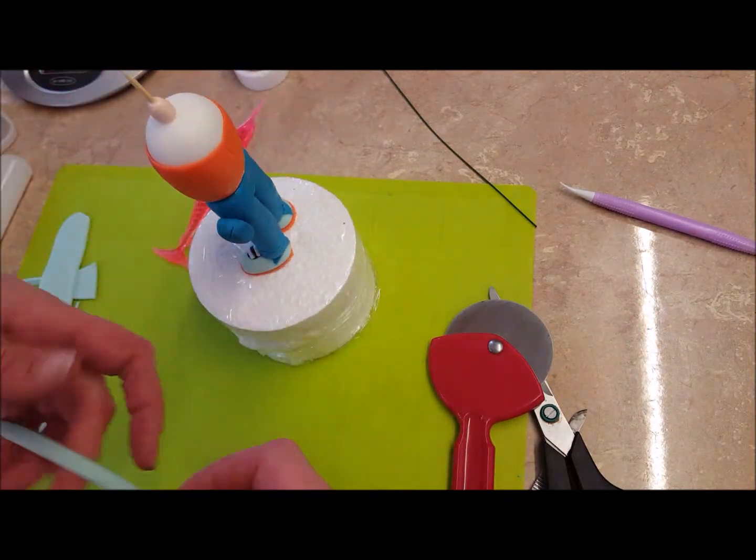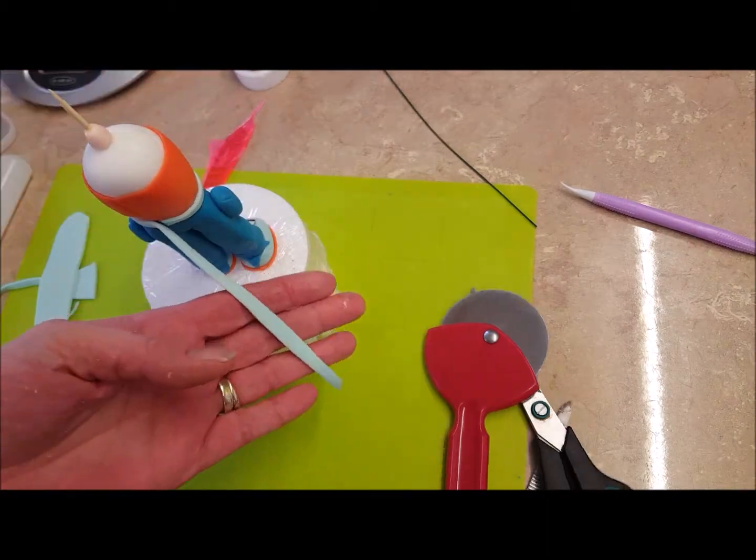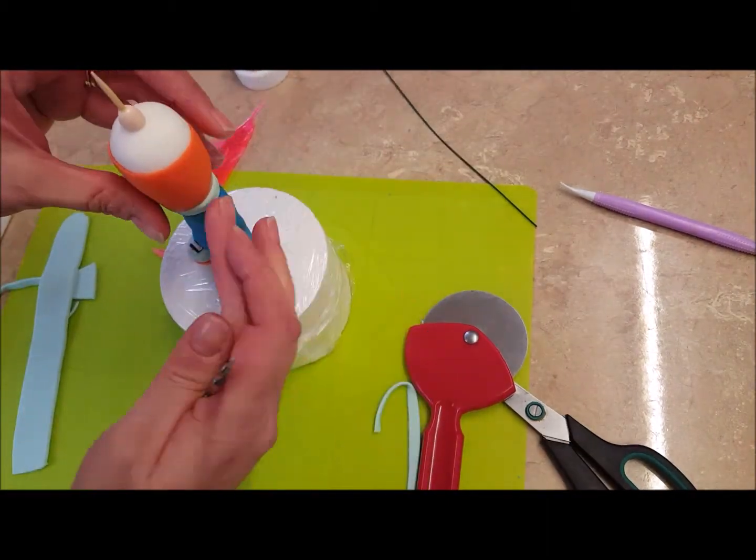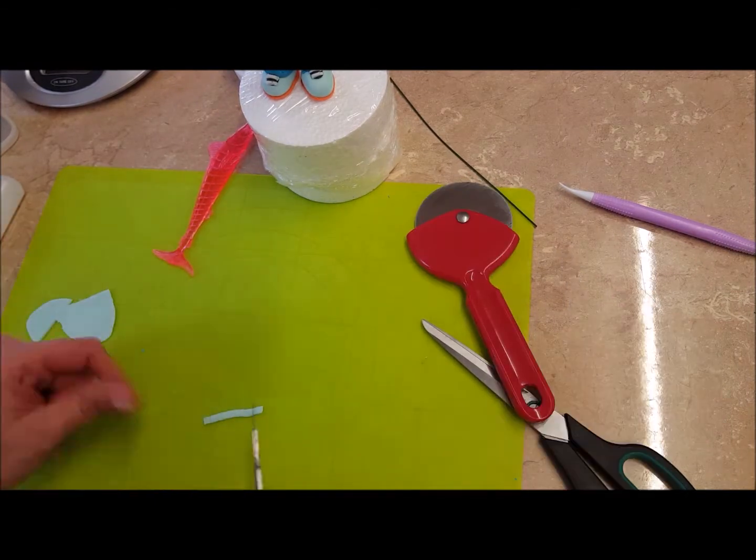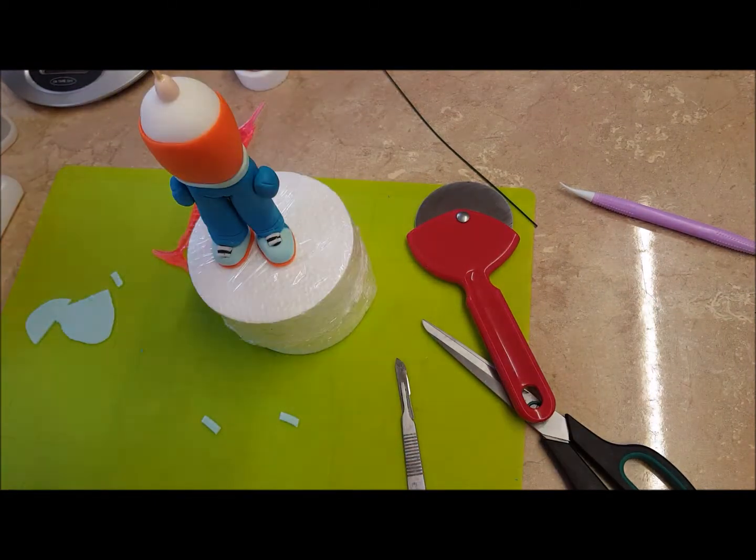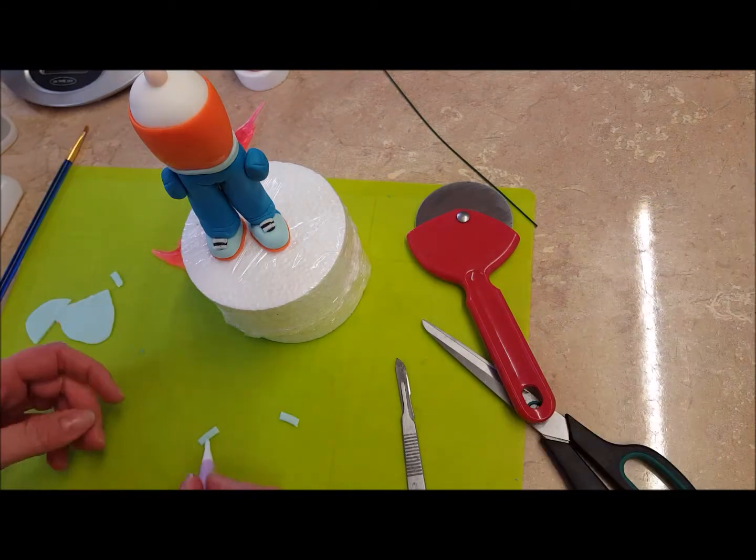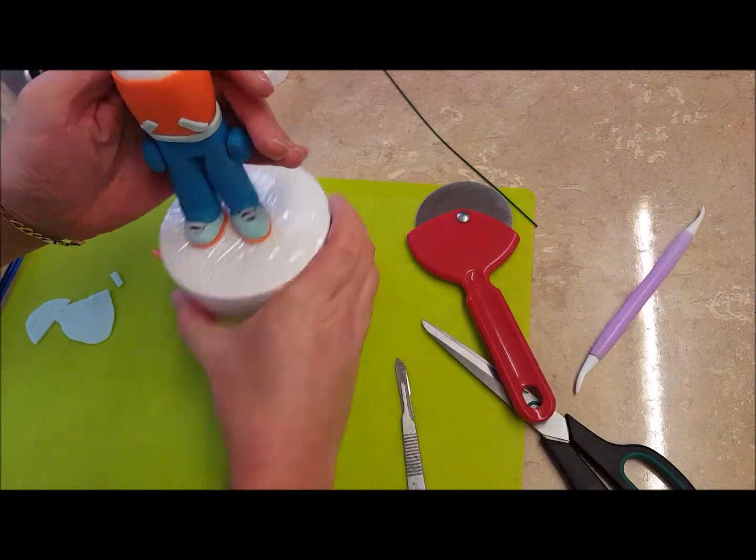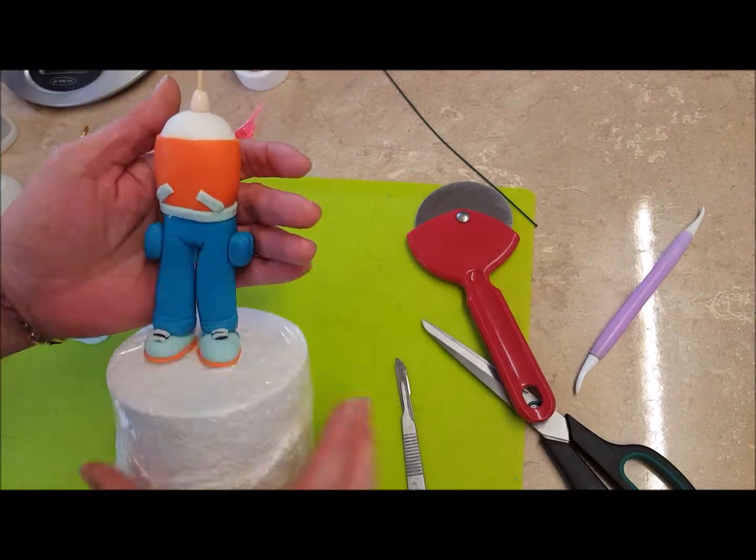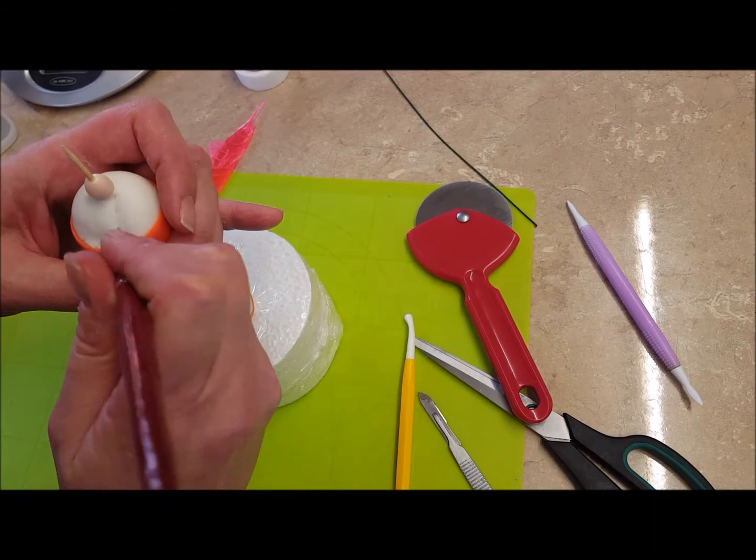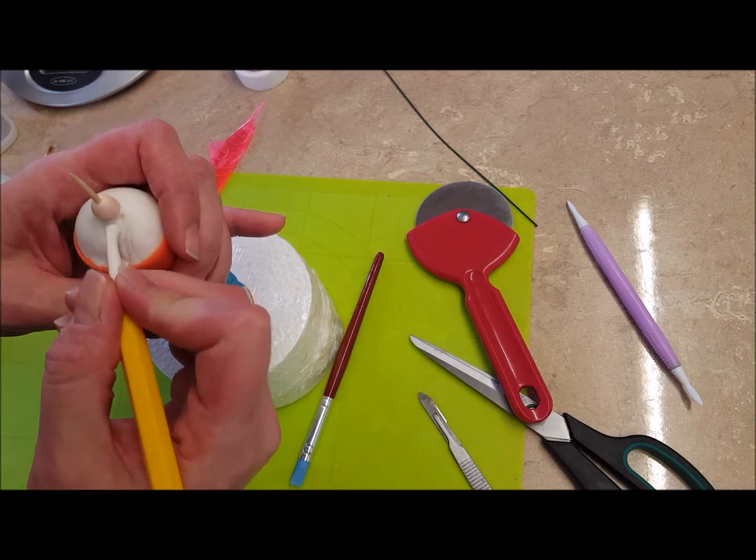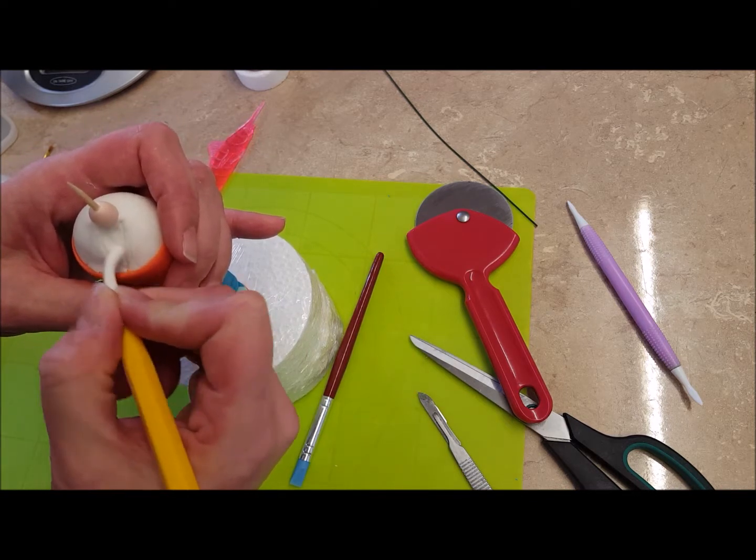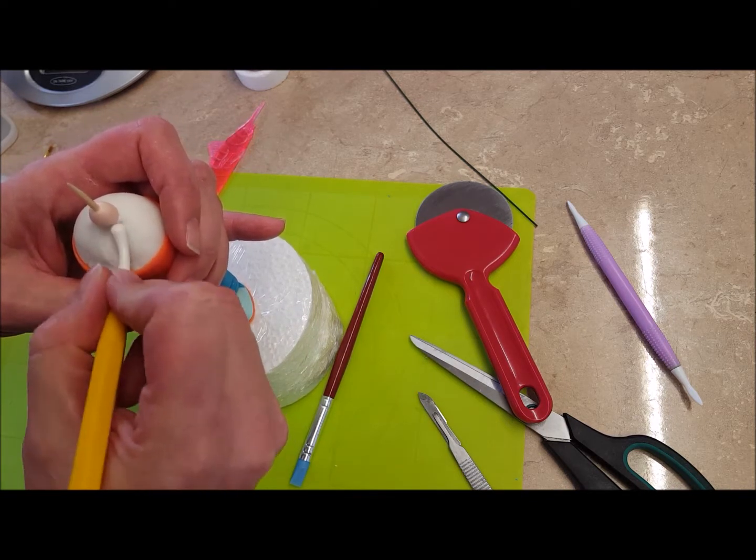This is for his belt, just a thin strip of blue. Stick it around his center. And these are for the two pockets at the front which go on like an angle. Add like a V shape into the top, and then just flatten it down so it looks like a little dip.